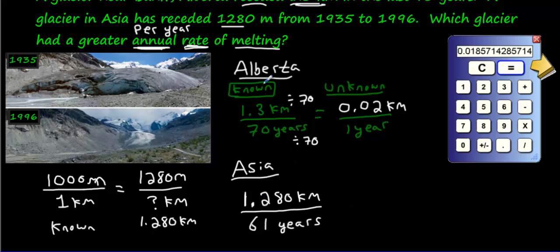That's our known ratio. Remember this side here, we're just doing our known ratio. Now what's our unknown? How much it receded? How many kilometers in one year? Because it says here annual rate, how much in one year? So we'll do it to this one too. Now, how did we turn 61 into one?